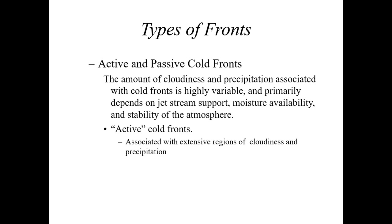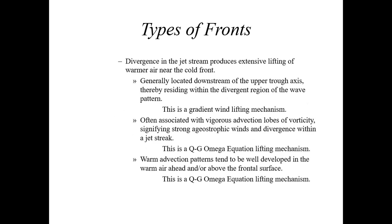Active cold fronts are the type associated with extensive regions of cloudiness and precipitation. We have what's known as divergence in the jet stream — the removal of mass high up at the jet stream level at about 30,000 feet. This is going to produce extensive lifting of warmer air near a cold front. We have to look at the placement of upper level divergence, the chimney effect, upper level convergence, and the damper effect.